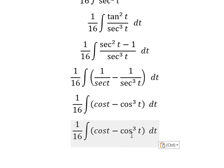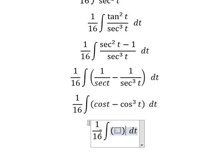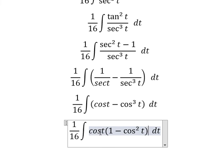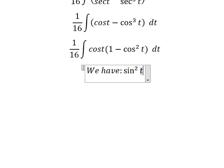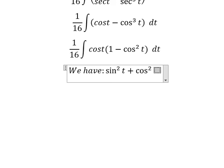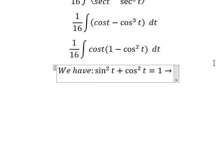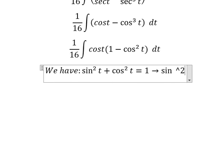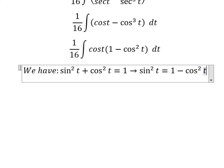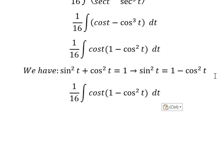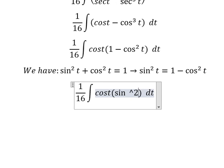We factorize cos(t) · cos(t) · cos(t). Then we use the Pythagorean identity: sin²(t) plus cos²(t) equals 1. Moving cos²(t) to the right gives sin²(t) equals 1 minus cos²(t). We substitute this in, replacing the appropriate term with sin²(t).